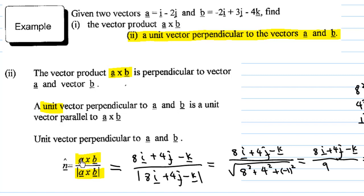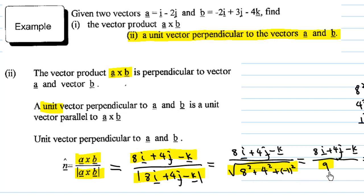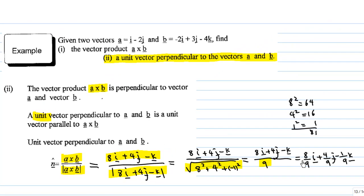I have already found a cross b is 8i plus 4j minus k. So I need to divide by the magnitude of 8i plus 4j minus k. The magnitude equals the square root of 8 squared plus 4 squared plus (minus 1) squared, which equals the square root of 81, and the square root of 81 is 9. So the unit vector perpendicular to both a and b is (8/9)i plus (4/9)j minus (1/9)k.